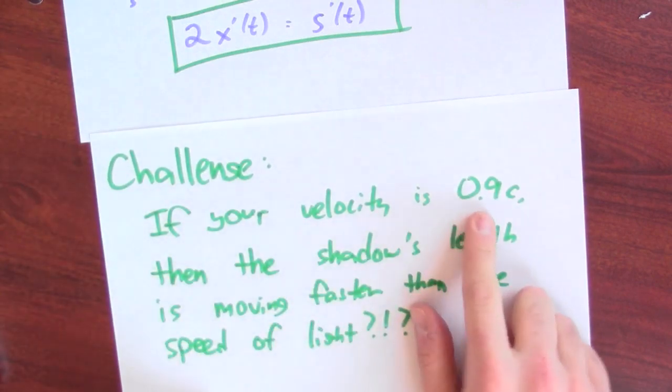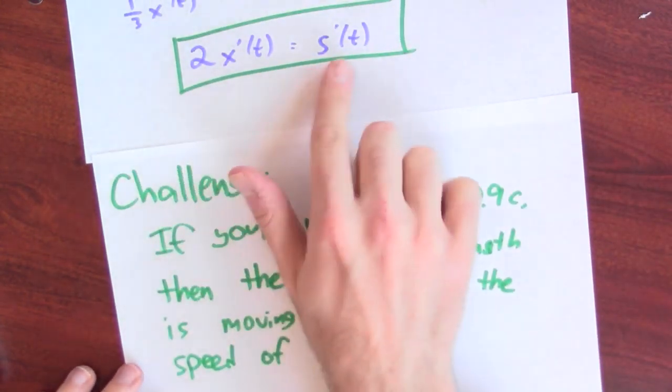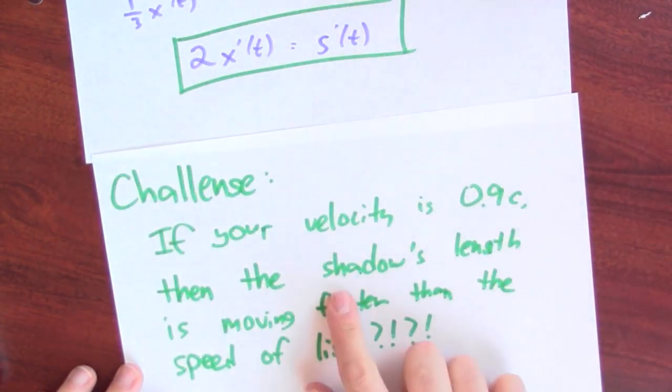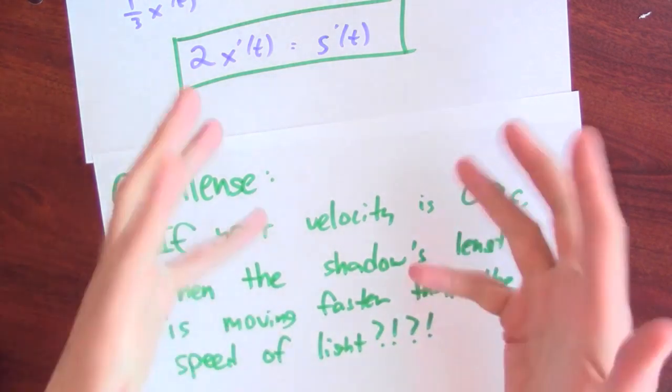If your velocity is 90% the speed of light, so you're almost going the speed of light, then this formula would be telling you that your shadow's length would be moving faster than the speed of light. Is that really possible?